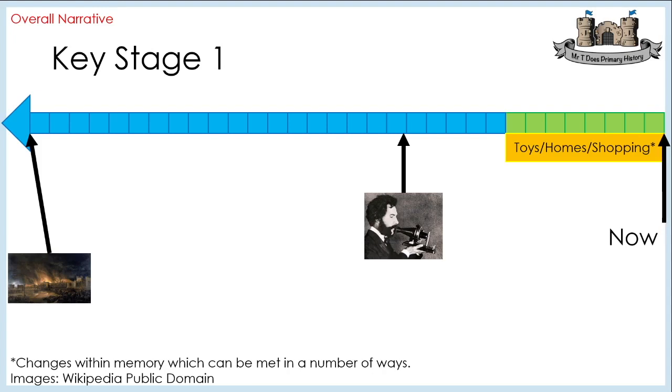Now the other obvious answer to why nobody phoned the fire brigade is because there wasn't a fire brigade. That's an interesting consequence, indirectly, of the Great Fire.